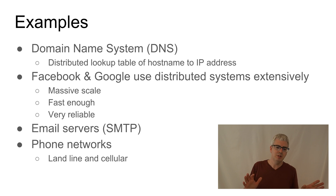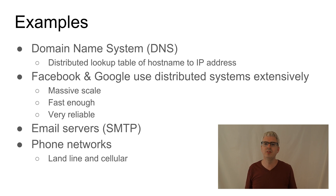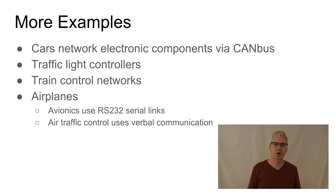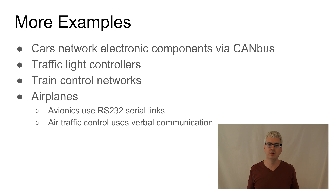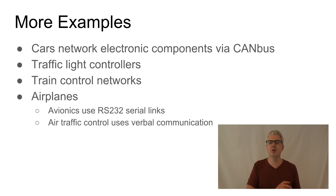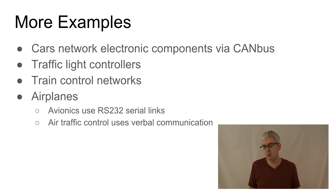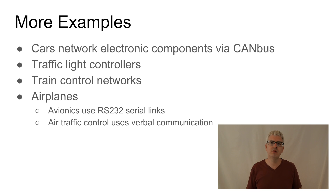Maybe you could say distributed systems are most useful for networked systems — except there are networks in more places than you think. For example, in your car there's at least one network, maybe more, using what's called the CAN bus protocol. All of the electronic components in your car are networked together. If your car stereo crashes, the last thing you want is for it to send a message on the CAN bus that crashes your engine control unit, causing engine failure and possibly an actual crash of the car. Distributed systems techniques are used inside the car to help with fault isolation.